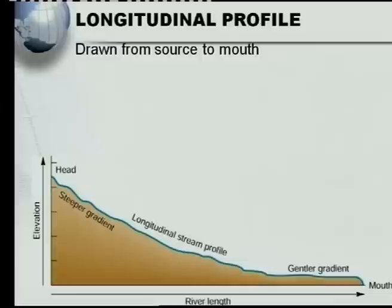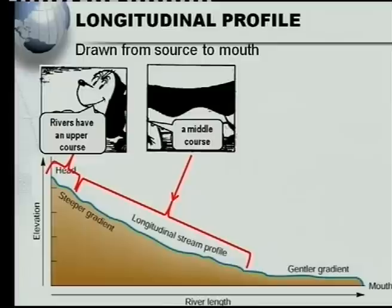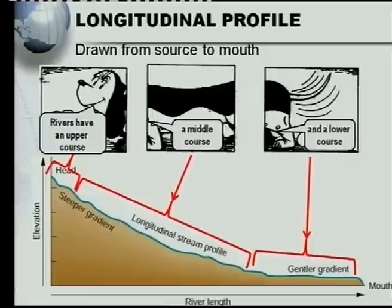Let's carry on with the longitudinal profile of a river. A longitudinal profile is drawn from the source to the mouth. Here is the source in the mountain, and there's the mouth of the river. In the fluvial cycle we have an upper course, a middle course, and a lower course, as this cartoon of the dog shows.